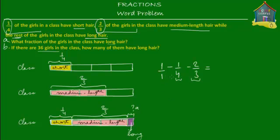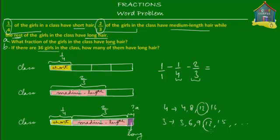We need a common multiple of one, four, and three. Every number is a multiple of one, so we focus on multiples of four — four, eight, twelve, sixteen — and multiples of three — three, six, nine, twelve. The common multiple is twelve, which is also the least common multiple. So twelve becomes the common denominator for all three fractions.